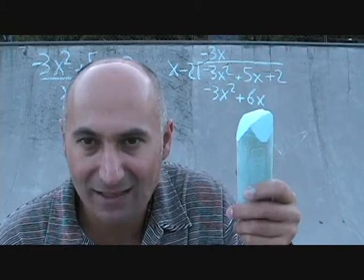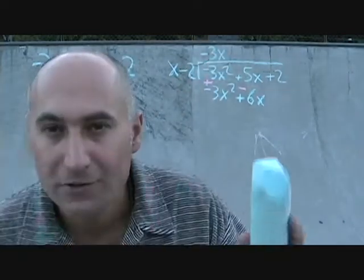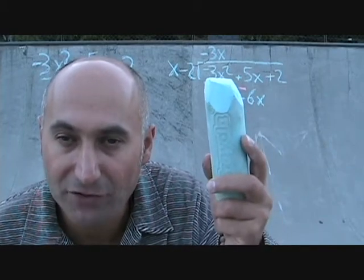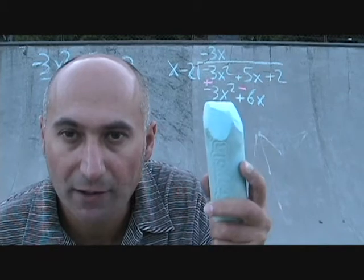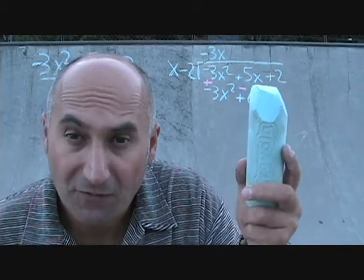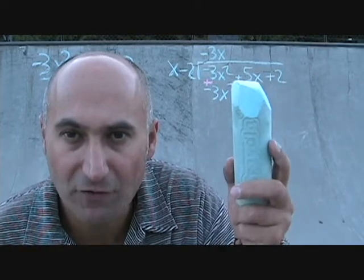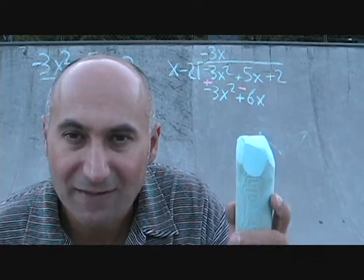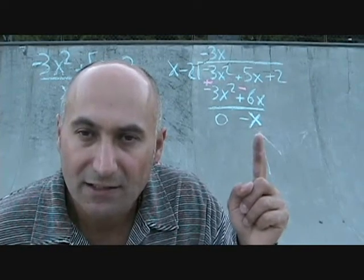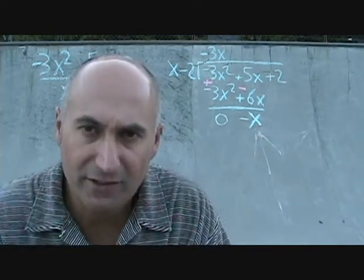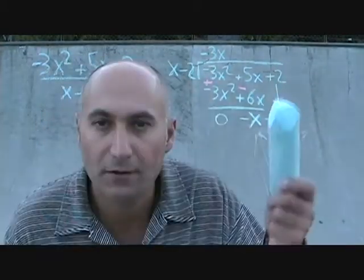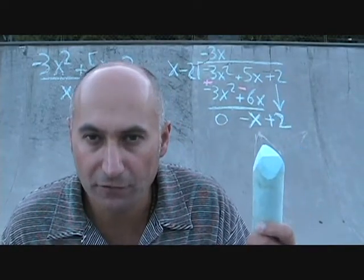So after laying down my terms, I change the sign of all the bottom terms and add. I change negative 3x squared to positive 3x squared and add it to the top: negative 3x squared plus 3x squared equals zero. On the other term, 5x plus negative 6x gives negative x. Then, just like with integer division, you grab the next term and bring it down — bring down the 2.